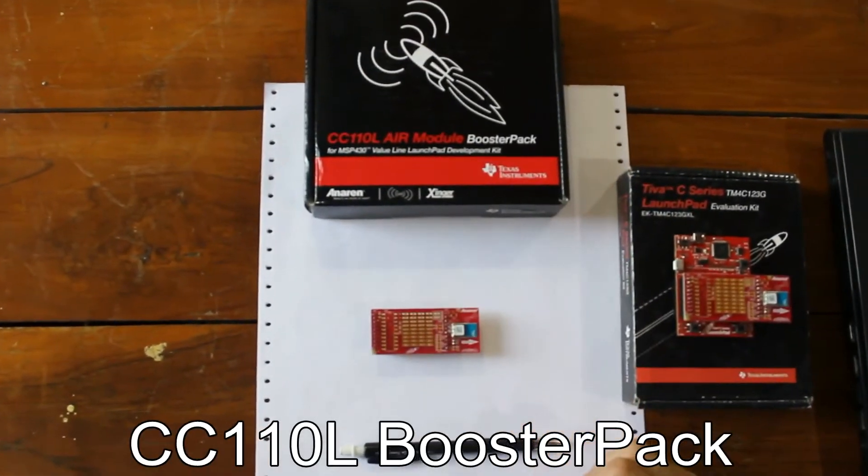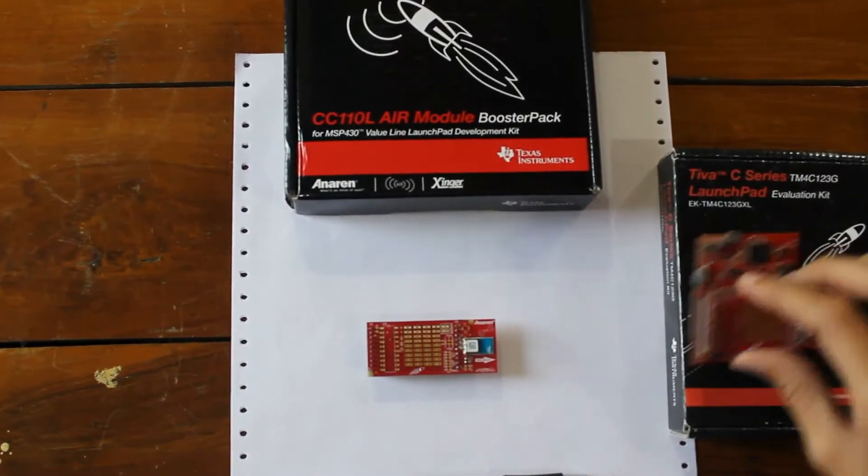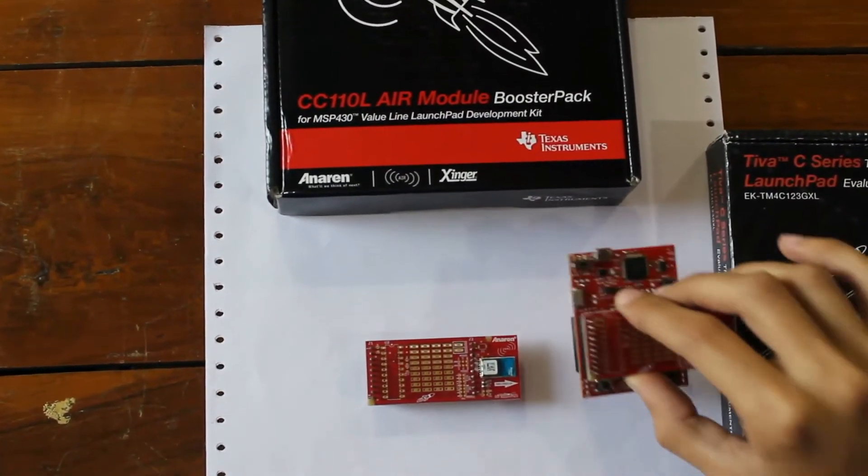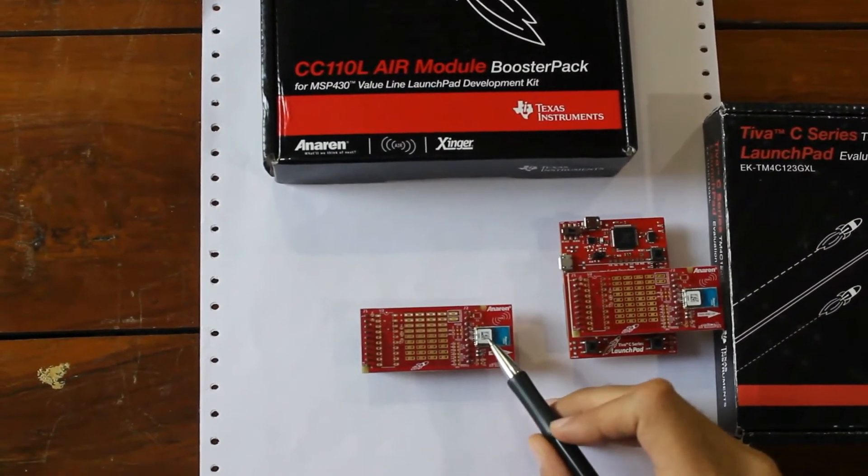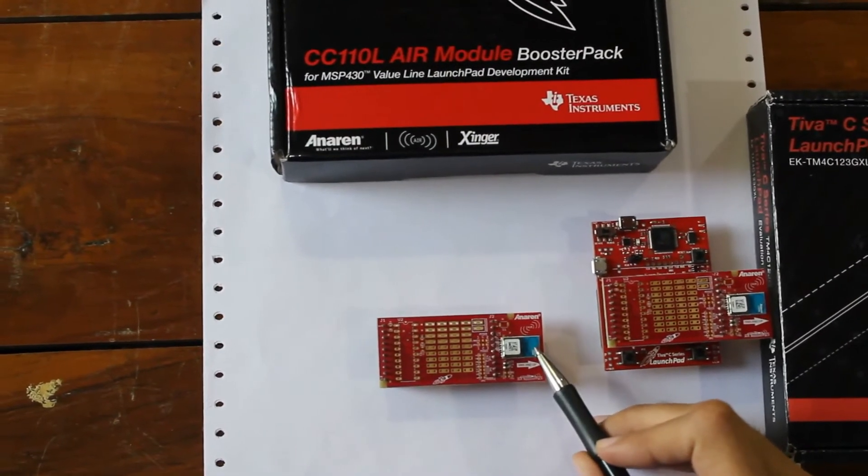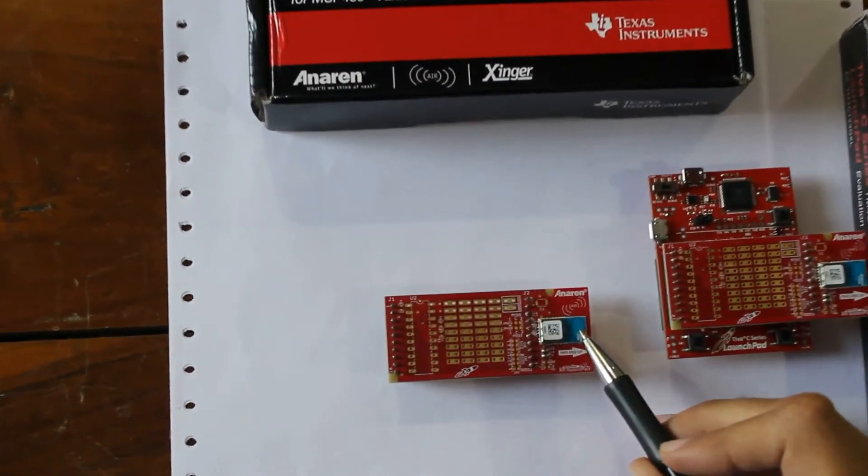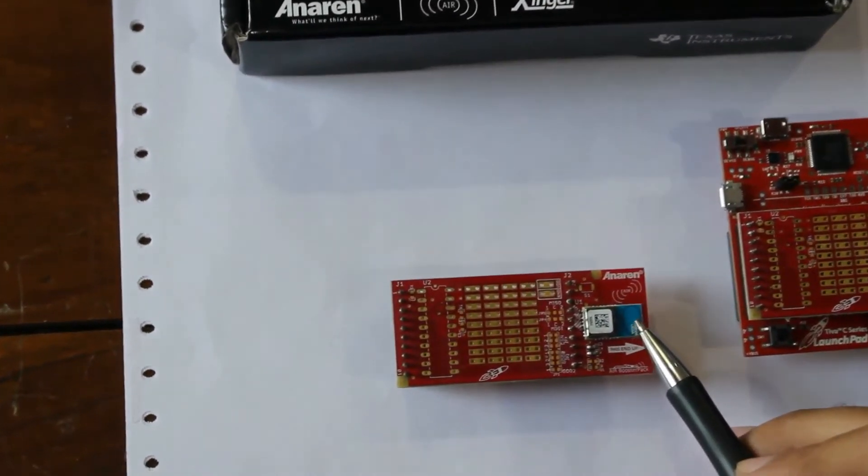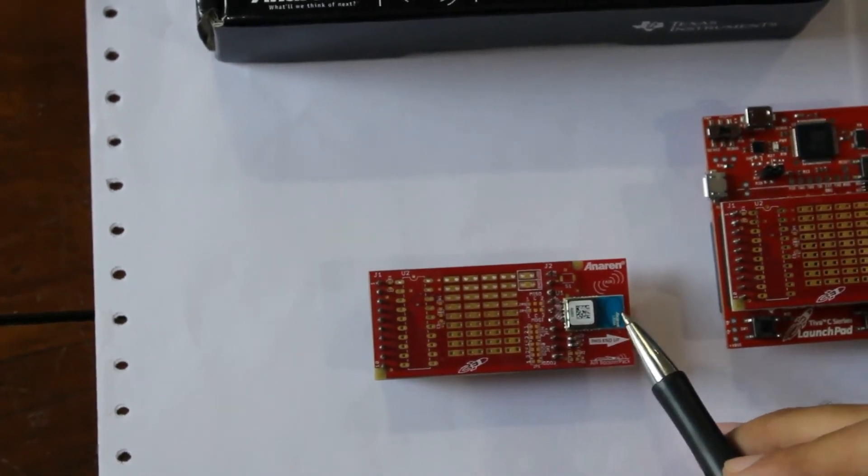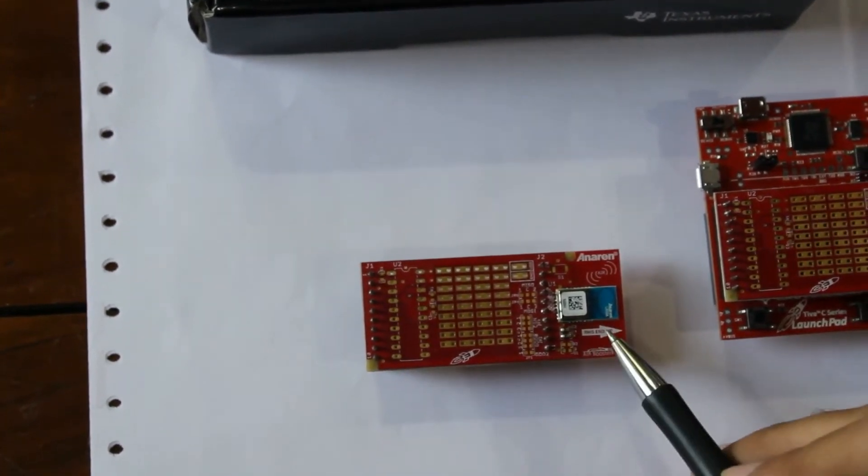This is CC110L Booster Pack. Booster Pack means it directly fits on launch pad like this. It is a wireless transceiver module. It has built-in antenna so we don't need to attach any external antenna. We used it to transmit and receive data between the humanoid hand and human hand.